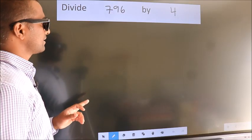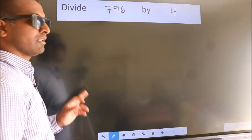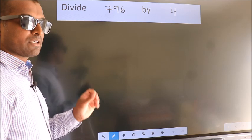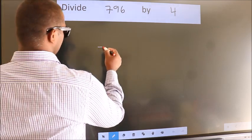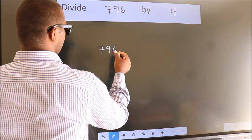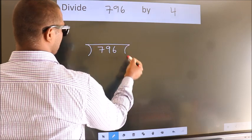Divide 796 by 4. To do this division, we should frame it in this way. 796 here, 4 here.